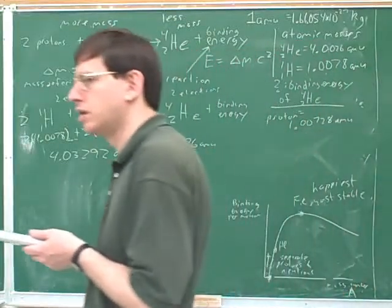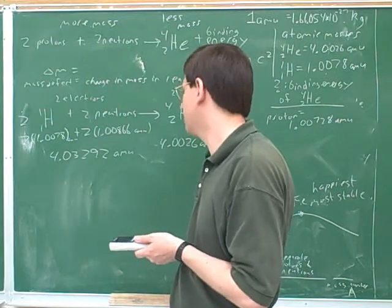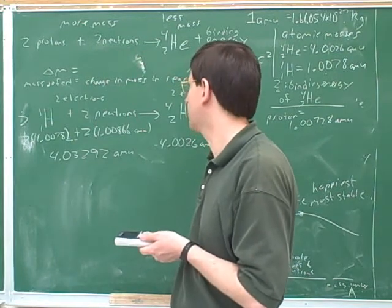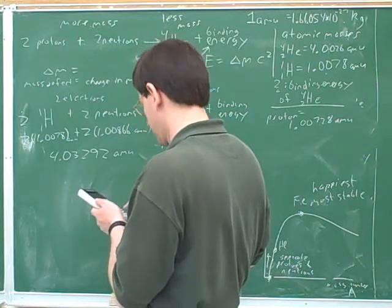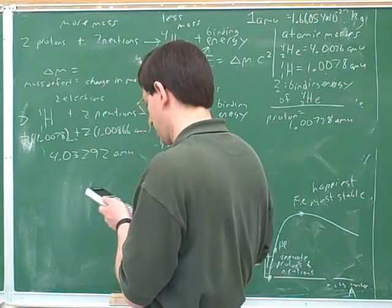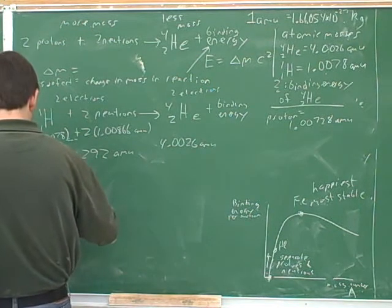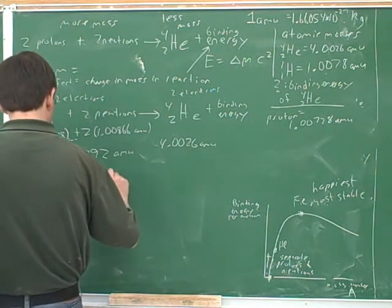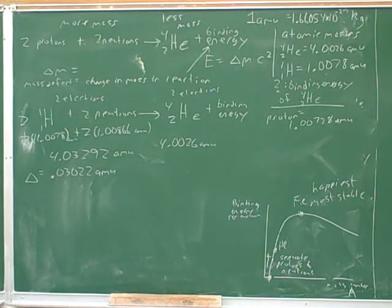Now to find the mass defect, and obviously you want to come out positive, so you want to subtract the bigger minus the smaller. Well, we knew that there's going to be more mass on the left, right, because we've been working in AMUs all along. Okay, good.